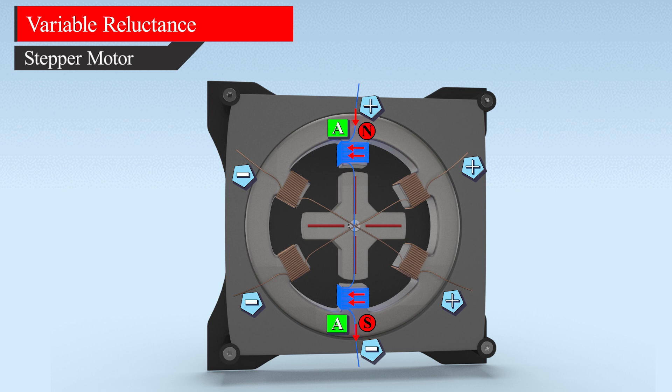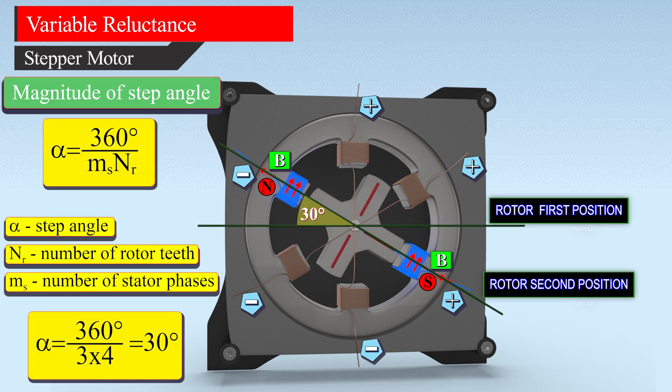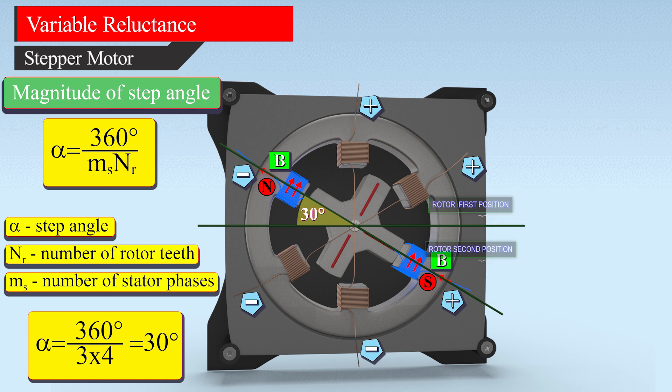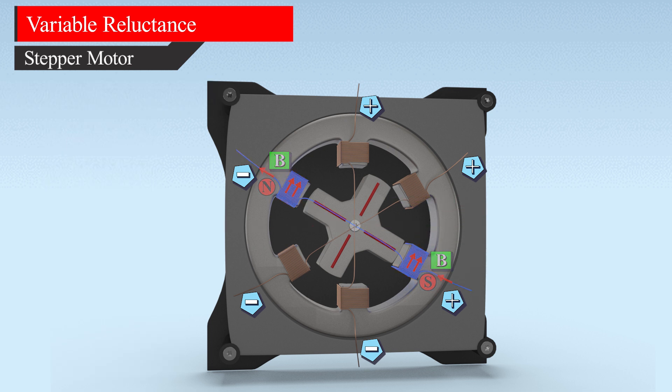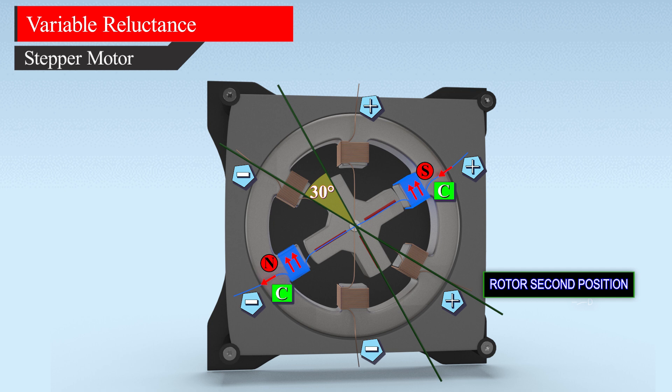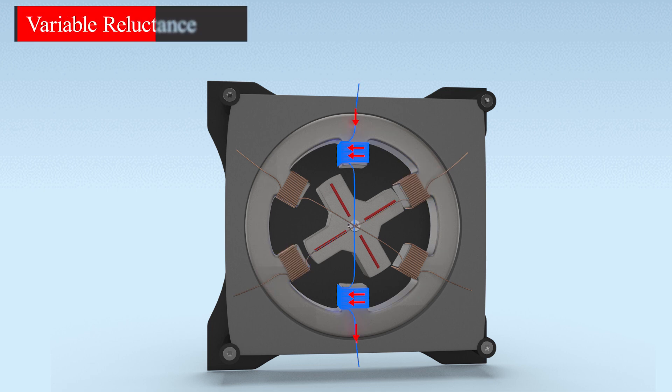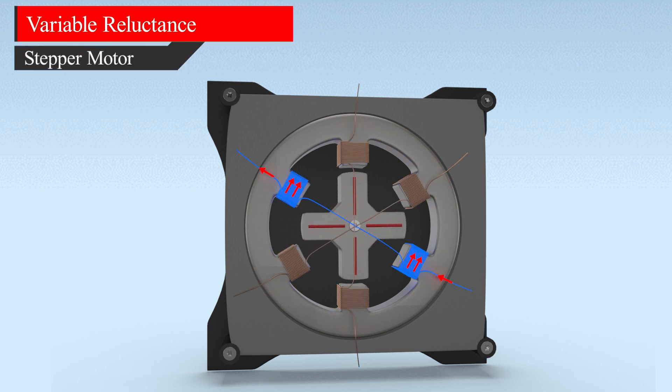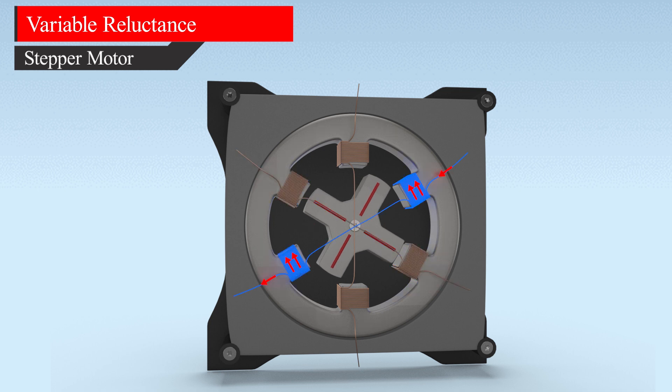If you de-energize pair of windings A and deliver current to pair of windings B, the B windings will attract the nearest pair of teeth. From the geometry, it's clear that one step size is 30 degrees. Again, if we de-energize pair B and deliver current to pair C, the C windings will attract the nearest pair of teeth, again 30 degrees in the clockwise direction. In short, the rotor follows this sequence: six steps to complete one revolution. The direction of rotation depends upon the sequence of supply signals given to each stator phase.